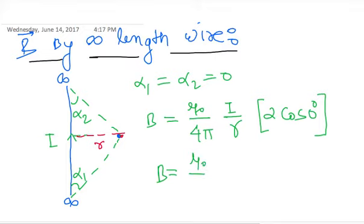So that will be 2 cos 0, and cos 0 is equal to 1. So B equals mu naught upon 4 pi times 2I upon R. Do not cancel it. Mu naught upon 4 pi has a direct value of 10 to the power minus 7, and it helps us to relate all the formulas. So the result is 2I upon R with perpendicular distance.